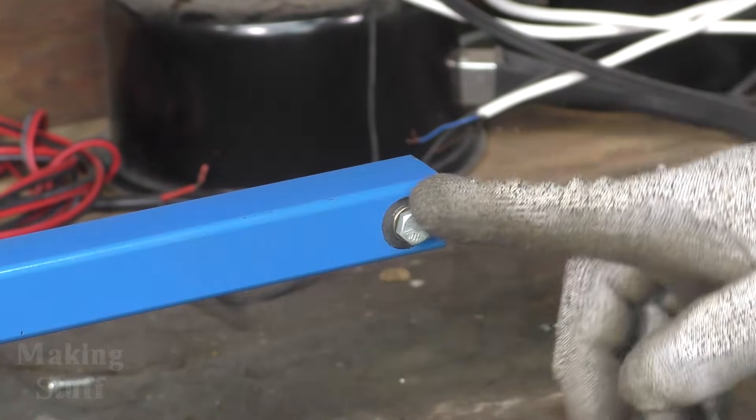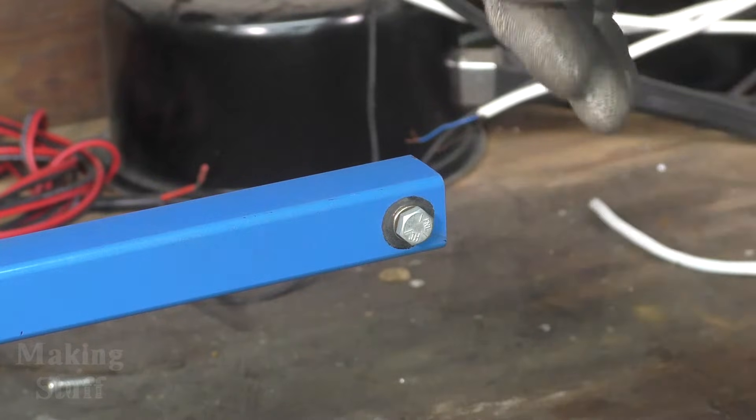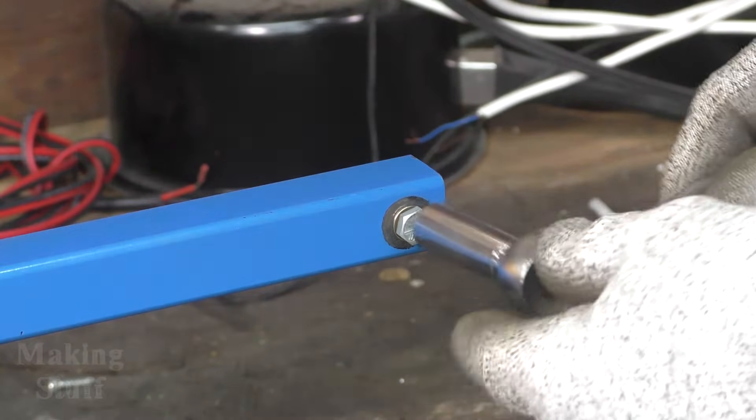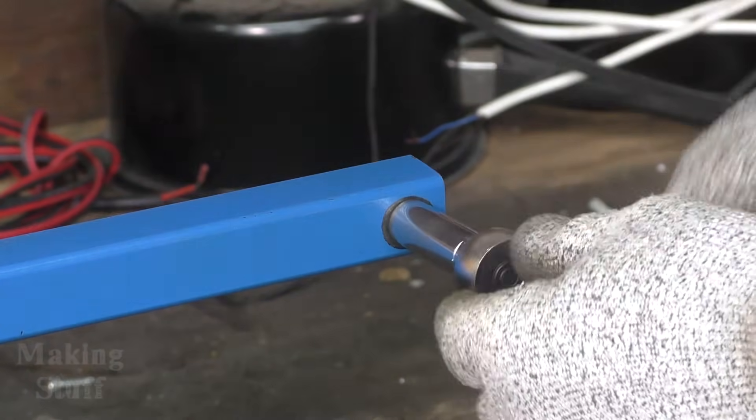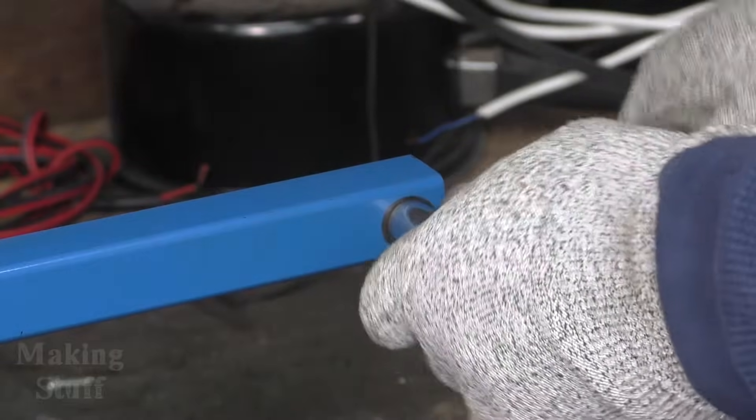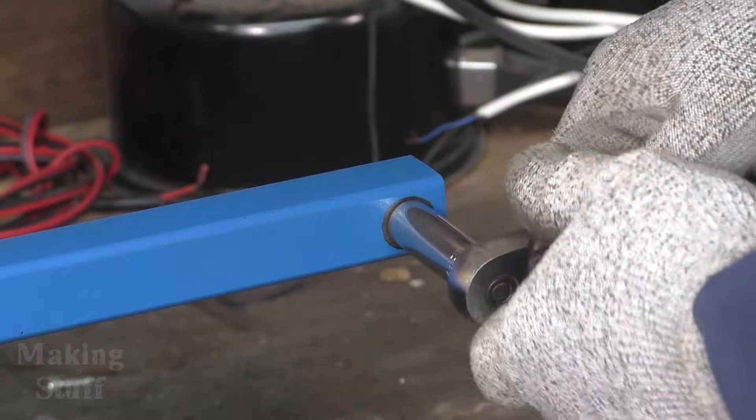So I was wondering how much abuse would this threaded insert take before it failed. And I'm going to try that out right now. I've got a 1.25 bolt in there and I've got my ratchet here and I'm just going to tighten this down and I'm going to see how much it will take before it fails.